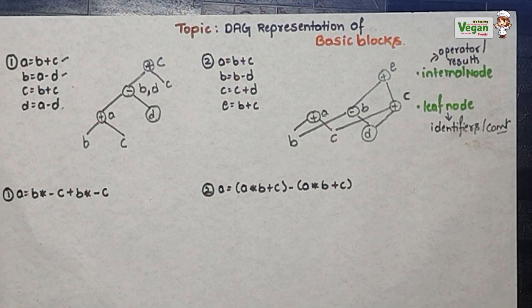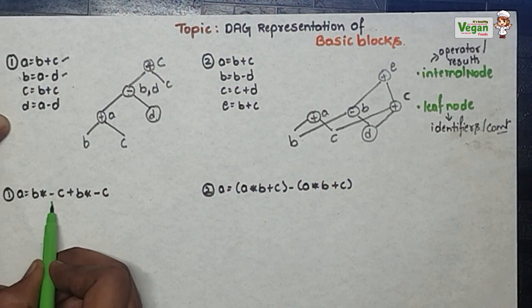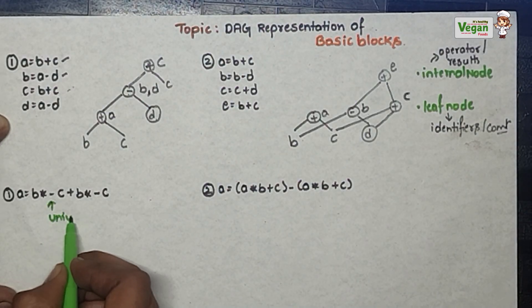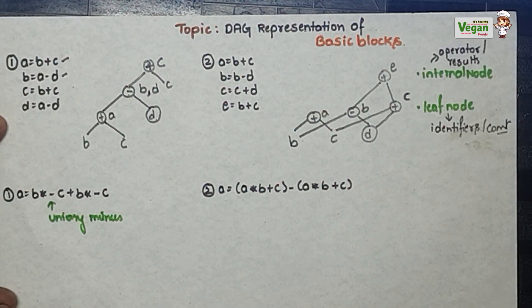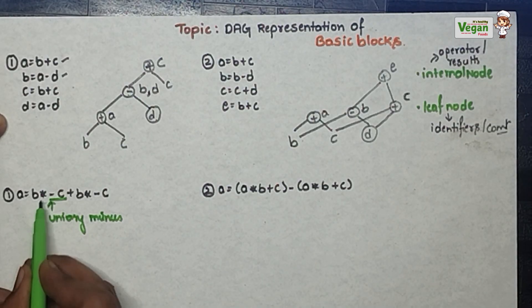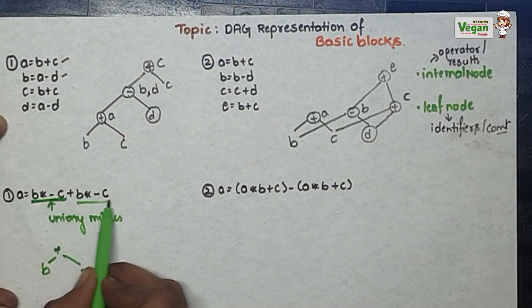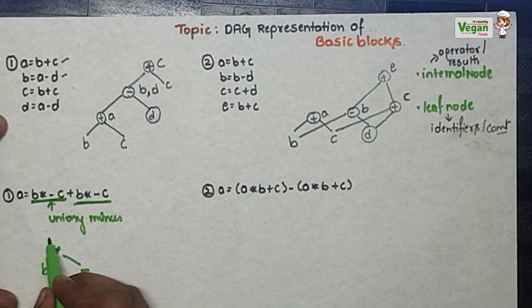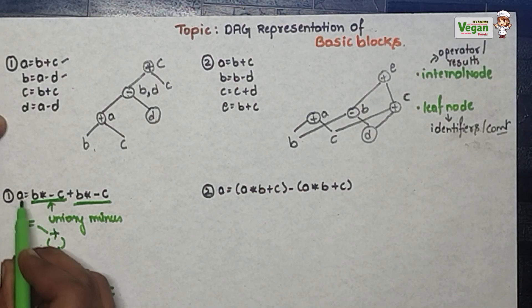Next let's go with another type — problems having unary minus. After the star, which represents multiplication, we are having minus, so this minus is called unary minus. Unary minus will have more precedence than all other operators. So first we represent minus C, then B star minus C. Since B star minus C appears again, instead of writing it twice I give a loop, with plus in between them. So B star minus C and B star minus C together equate to A.